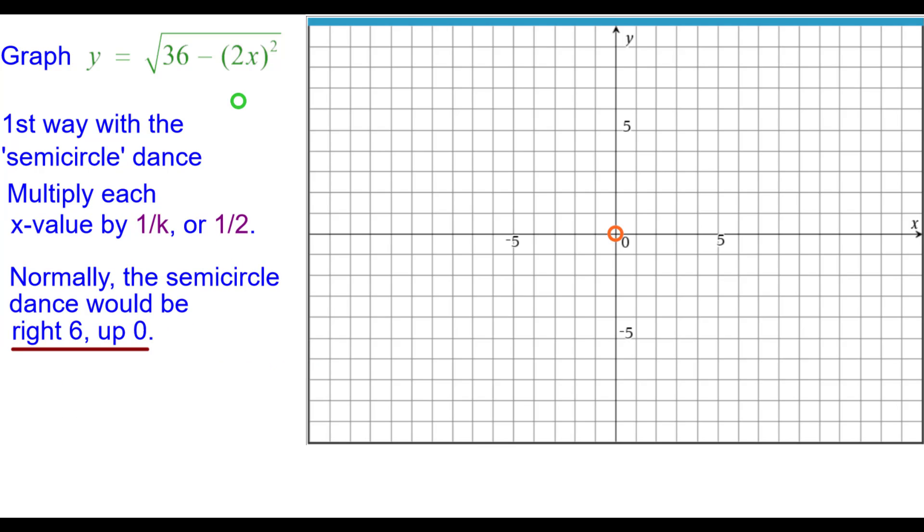So normally the semicircle dance would be right 6 up 0. But because of the 2x, we have to multiply half times 6, so it's right 3 up 0. The x coordinate is affected, but the y coordinate is not.